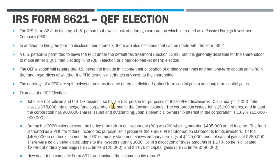PFICs have certain default tax treatments. A US person is allowed to keep the default treatment, which is a Section 1291 fund, but it's generally more preferable and desirable from a tax perspective if the shareholder makes a Qualified Electing Fund — or QEF — election, or the mark-to-market MTM election. I'm not going to go over the mark-to-market one in this video. This is an example of a QEF election. There'll be a separate video on MTM elections.